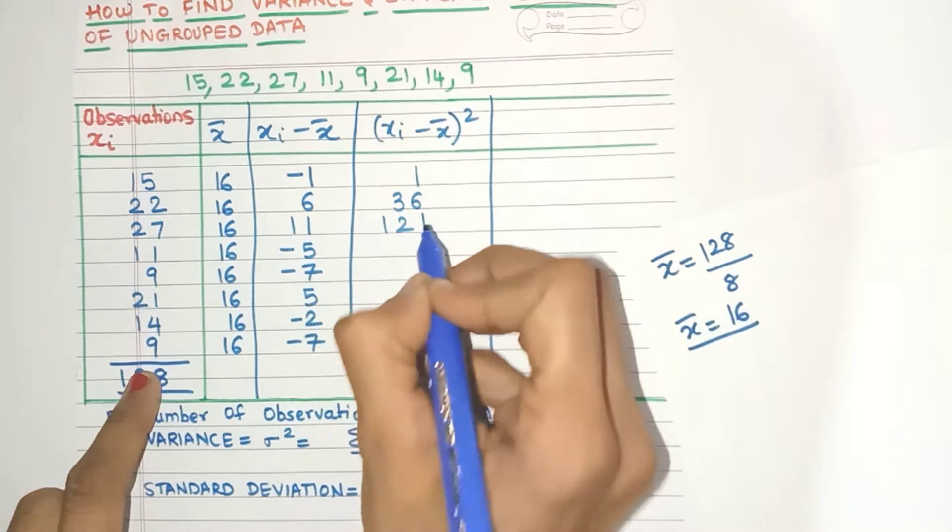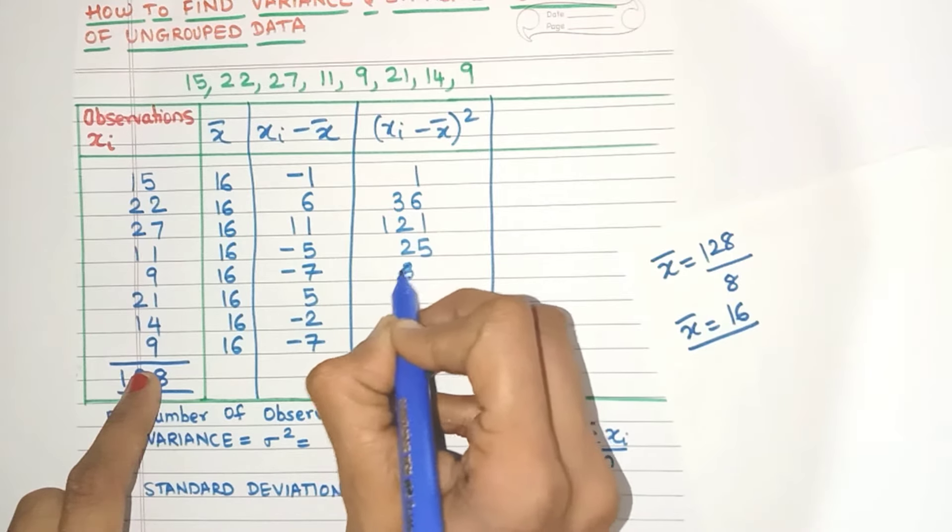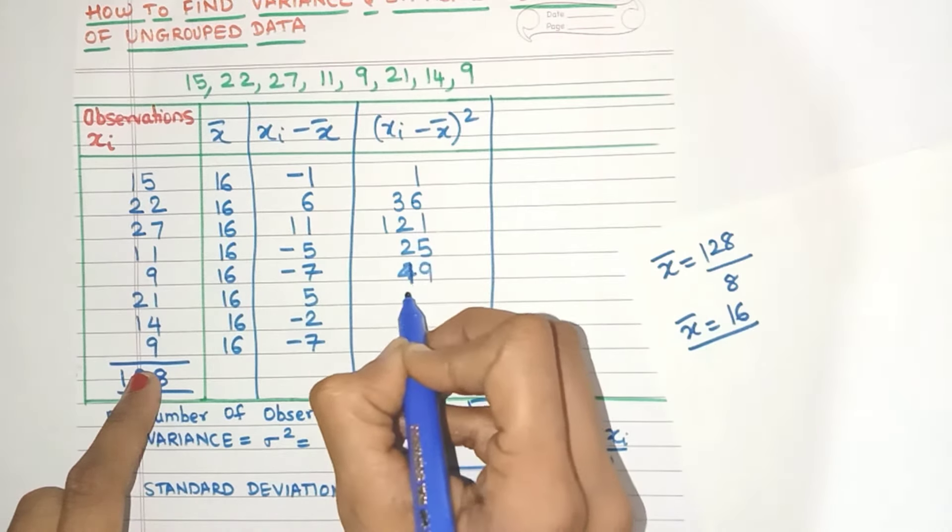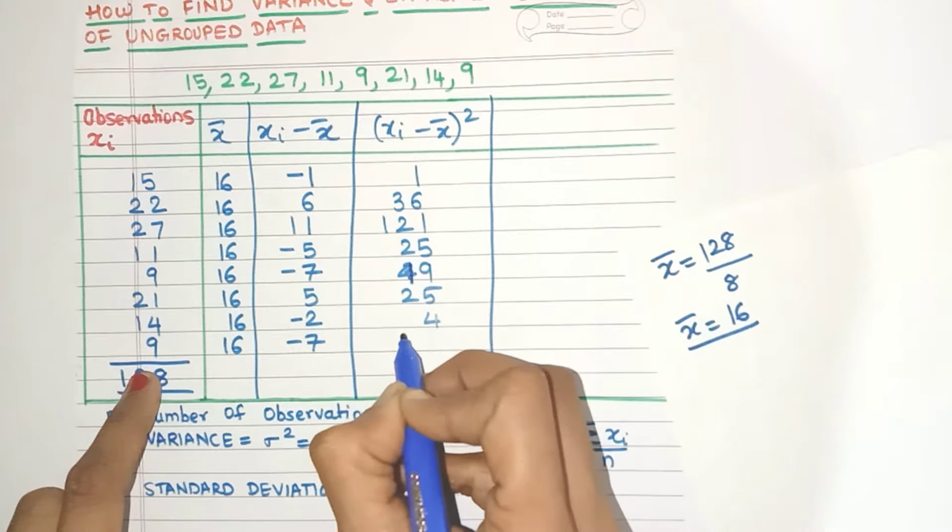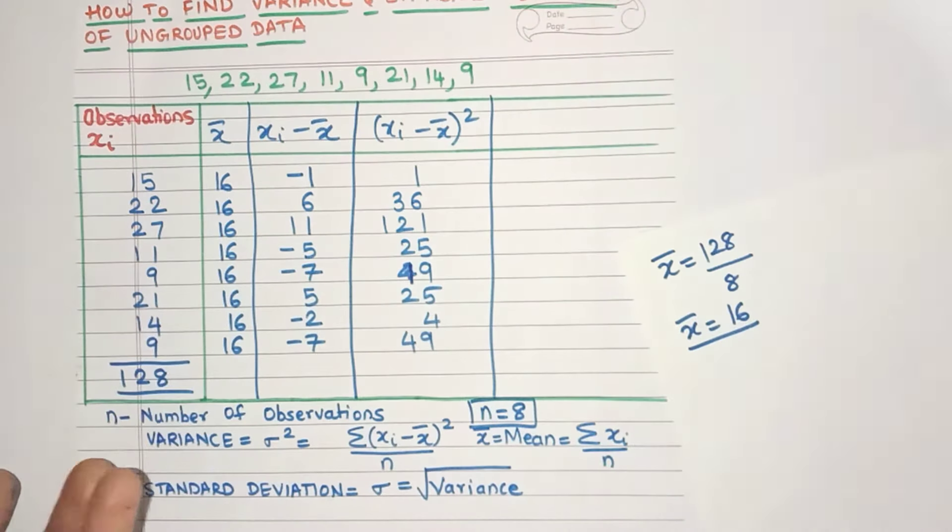So 11 square, 121, 25, this is 49 and this is 25, 4 and yes, 49 again. See, all the minus has vanished.